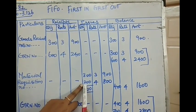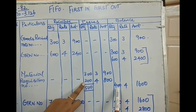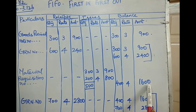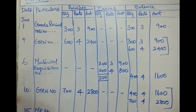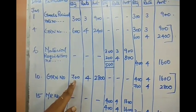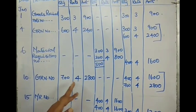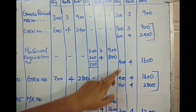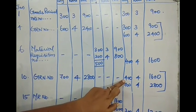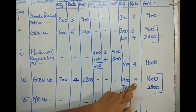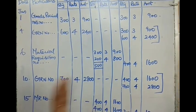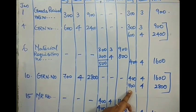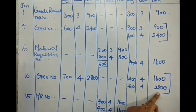On January 10th, there is another purchase: 700 units at ₹4 per unit, totaling ₹2800. The previous balance of 400 units at ₹4 per unit, ₹1600, is kept separately. The new transaction of 700 units at ₹4 per unit, ₹2800, is recorded separately — do not mingle the transactions.